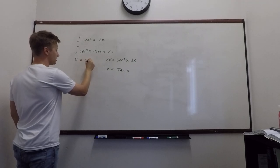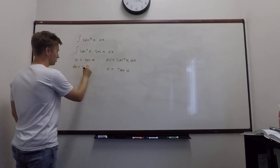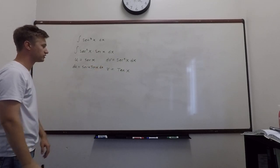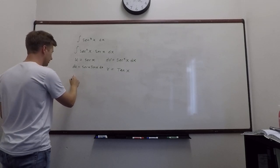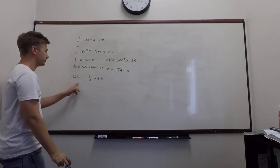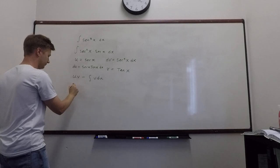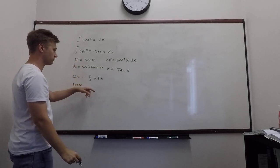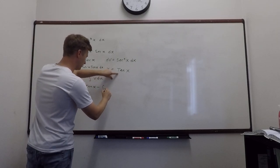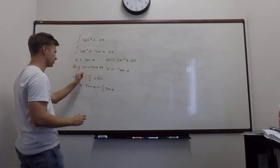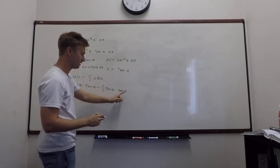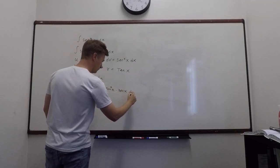So u equals secant, and du equals secant tangent dx. We throw it all into the integration by parts formula: uv minus the integral of v du. So u is secant x, v is tangent, giving us secant tangent. Then minus the integral of v, which is tangent, times du, which is secant tangent — so tangent times tangent is tangent squared. We have secant times tangent squared dx.